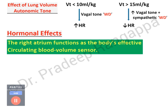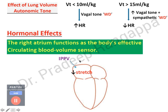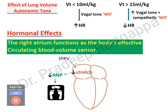There are hormonal effects that also bear on heart-lung interactions. The right atrium functions as the body's sensor for circulating blood volume. On controlled mechanical ventilation, there is reduced stretch on the right atrium, leading to reduced production of atrial natriuretic peptide (ANP). Since ANP normally causes diuresis, reduced ANP production leads to fluid retention. This is why mechanically ventilated patients tend to retain fluid and put on weight — reduced atrial stretch leads to reduced ANP and fluid retention.